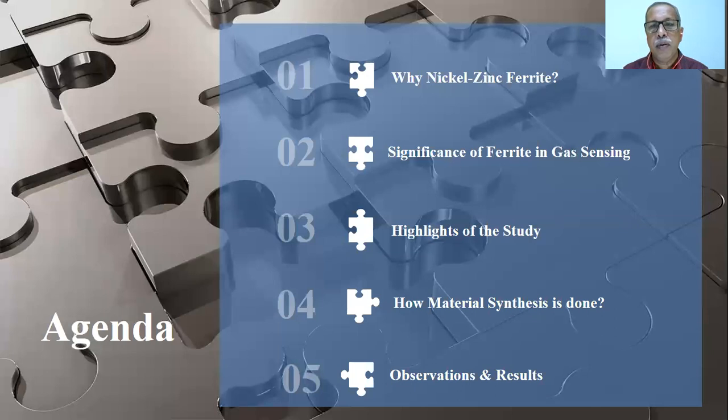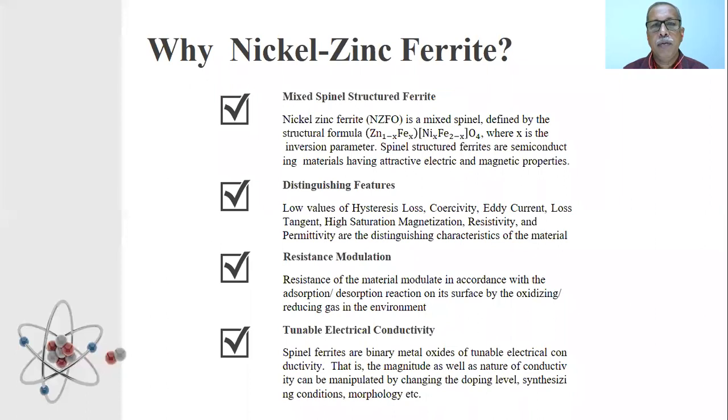These are the points which we are going to discuss here in this session. The material of choice is nickel-zinc ferrite. It is a mixed spinel-structured material. It shows attractive magnetic and electrical properties. Some of the interesting features of the material are its low value of coercivity, low value of hysteresis loss, low eddy current loss, low value of loss tangent, high saturation magnetization, high resistivity, and permittivity.